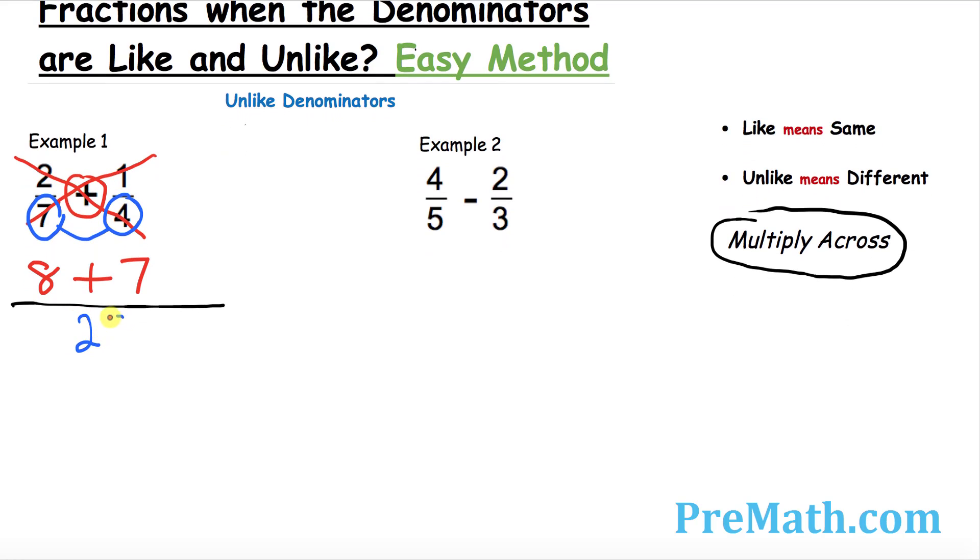I want you to multiply these two numbers: 7 times 4, always multiply them, so 7 times 4 is 28. So that's pretty much it. Now let's go ahead and add these two numbers on the top which is 15 divided by 28.